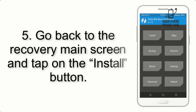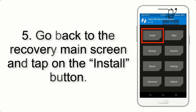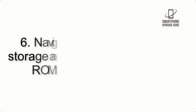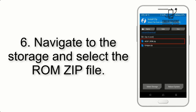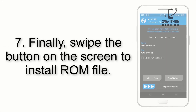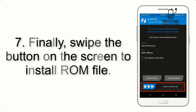Step 4: Swipe the button to wipe the device. Step 5: Go back to the recovery main screen and tap on the Install button. Step 6: Navigate to the storage and select the ROM zip file.